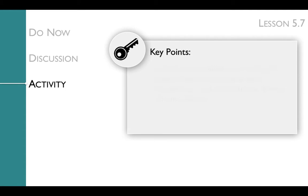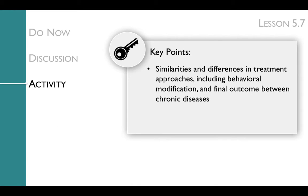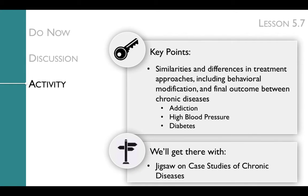The key points of the activity are the similarities and differences in treatment approaches, including behavioral modification, and final outcome between chronic diseases. The chronic diseases included in the Jigsaw are addiction, high blood pressure, and diabetes. We'll get to these key points with the Jigsaw on case studies of chronic diseases.